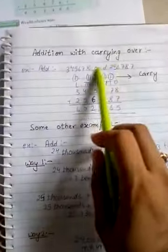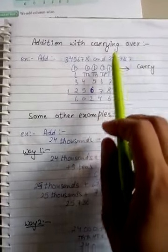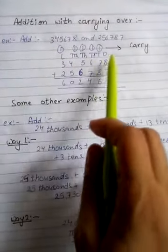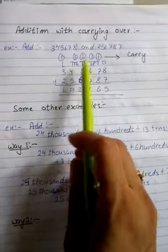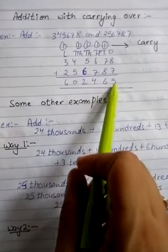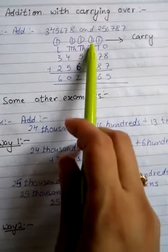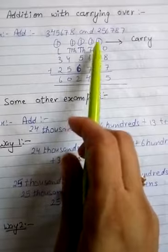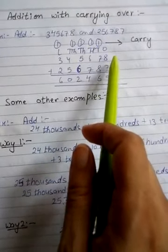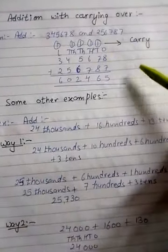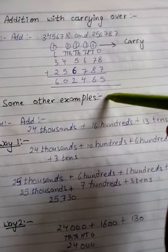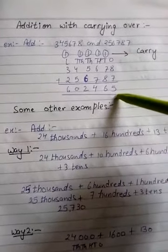Now come to addition with carrying over. As you know, again write the place values. Seven and eight is fifteen - carry forward one to the tens place. Fifteen - one's place digit is always written below, ten's place digit is carried forward. Eight and seven is fifteen, plus one is sixteen.